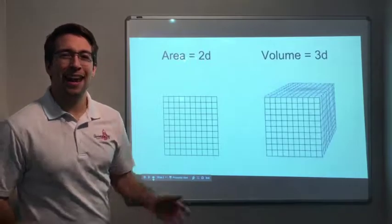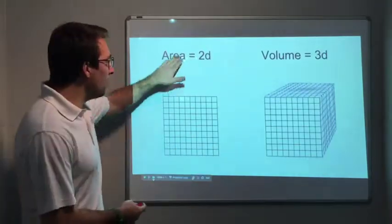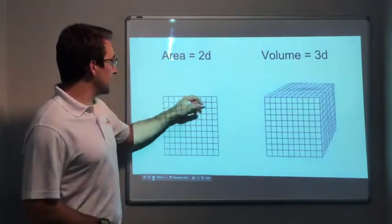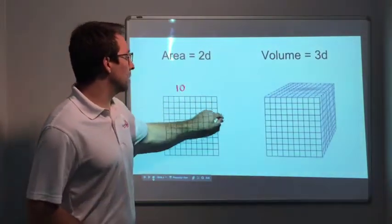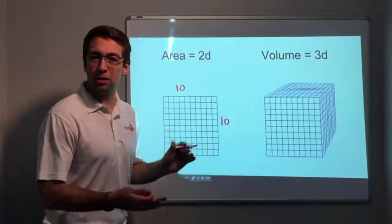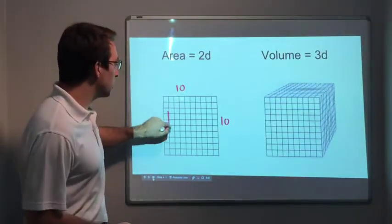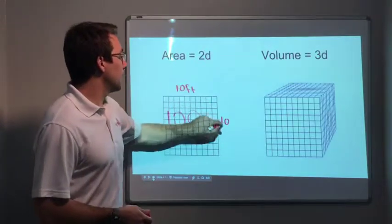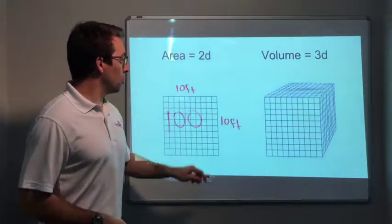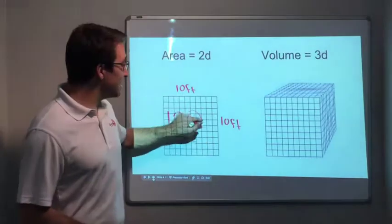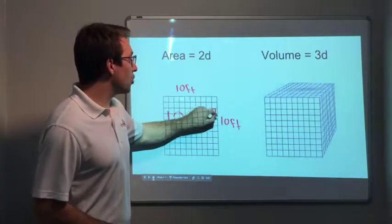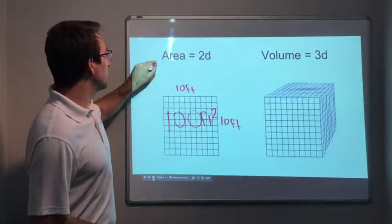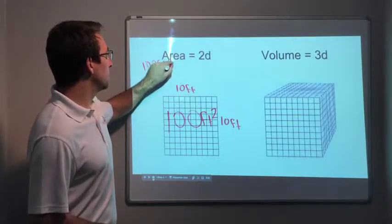So side by side, area, I keep telling you, area is two dimensions. This is a 10 by 10 grid. 10 by 10. So what's 10 times 10? It's 100. And let's say there's 10 feet and this is 10 feet. So this is 100 feet, but it's squared. So it's 100 feet squared. 100 foot squared.